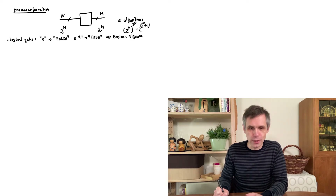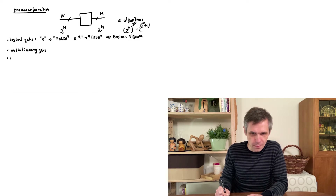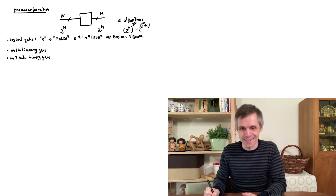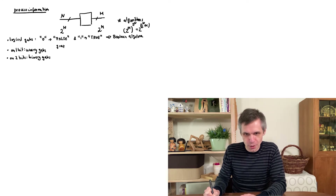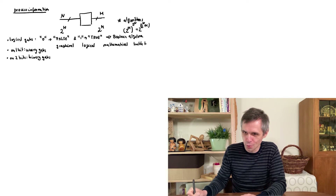If we apply these operations on individual bits then we call these unary gates, and if we apply them on any pair of bits then we call them binary gates. We will encounter different representations of these gates — graphical representations — and most concretely tables which we call truth tables.